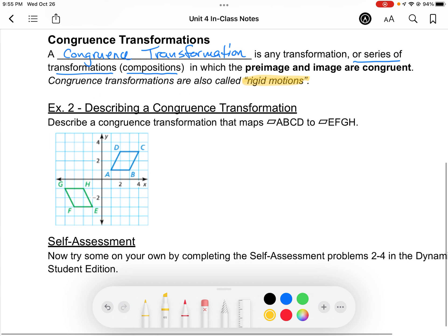So I want us to describe the congruence transformation that we might see in example two here. We've got our original parallelogram A, B, C, D, and I'm going to transform that into E, F, G, H.